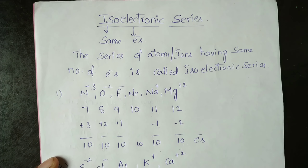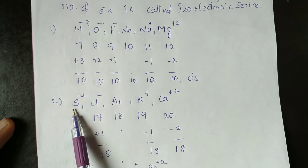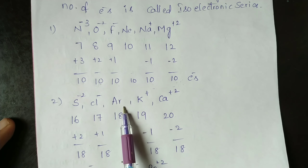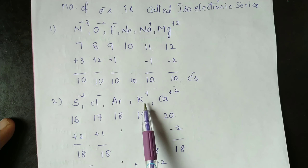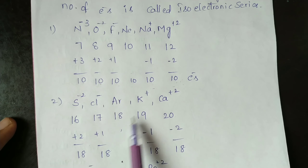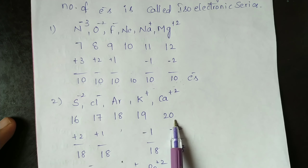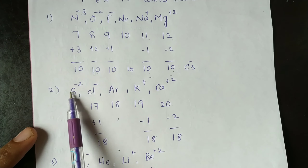Neon is 10. Na⁺: plus means loss of electrons. Sodium loses 1 electron: 11 minus 1 equals 10. Mg²⁺: magnesium loses 2 electrons, giving a total of 10 electrons. All these atoms or ions having the same number of electrons is called an isoelectronic series.